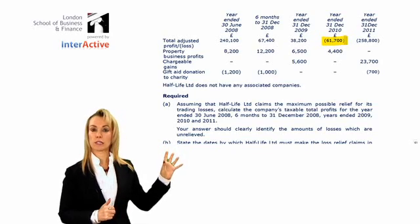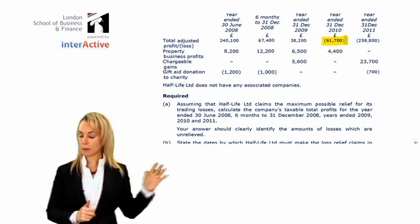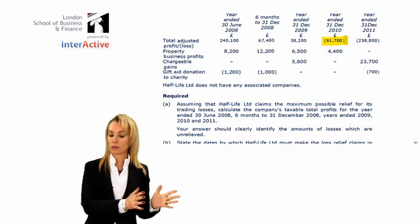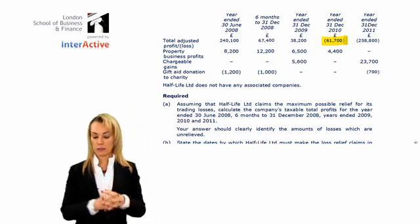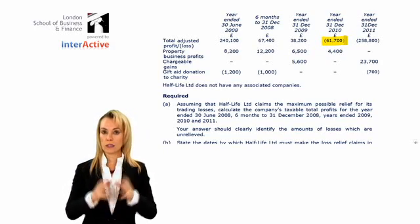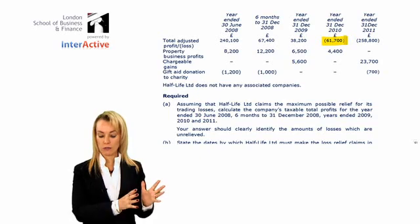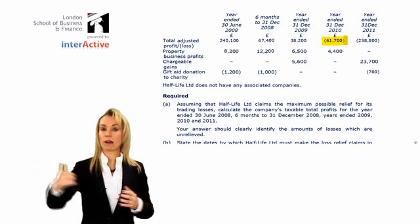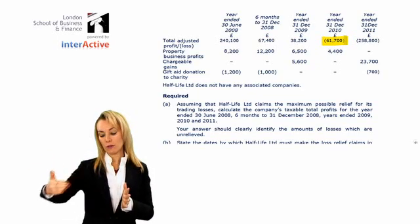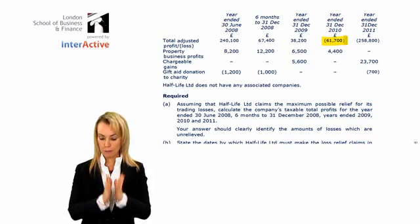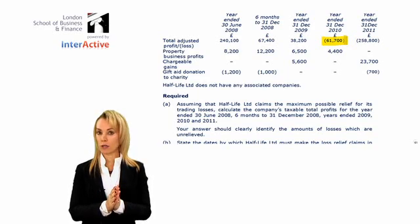That will leave you with some loss remaining, so underneath Section 37 current — still in blue — you'd have Section 37 carry-back, carrying the loss back 12 months to December 2009. Adding up your P, R, and chargeable gains, the remaining loss is deducted from that. If you still have loss left over, you'd normally carry it forward and deduct it from P, but since there's another loss ahead, that's not possible. So the balance of the 61,700 not used in the current or carry-back period is therefore wasted.